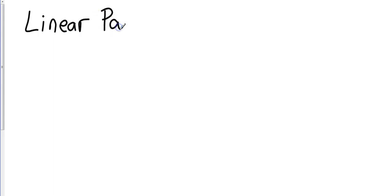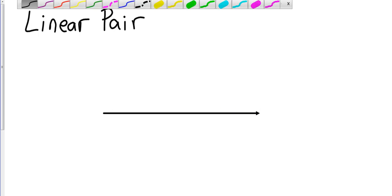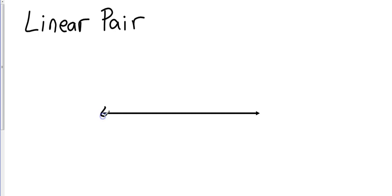We also have what's called a linear pair. Two very important keywords here: there are two angles, and the two of them are going to form a line.